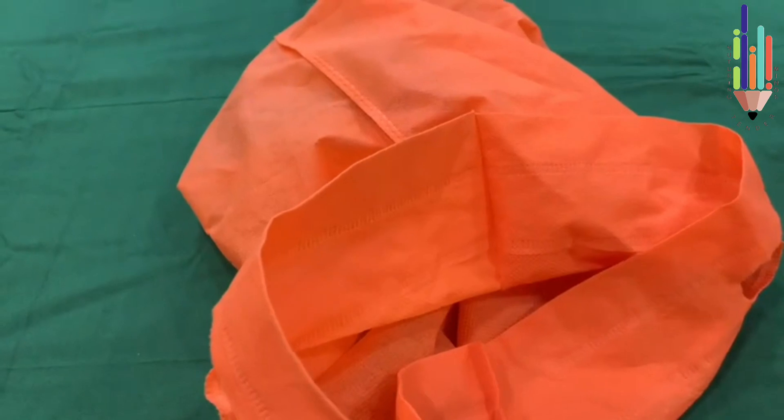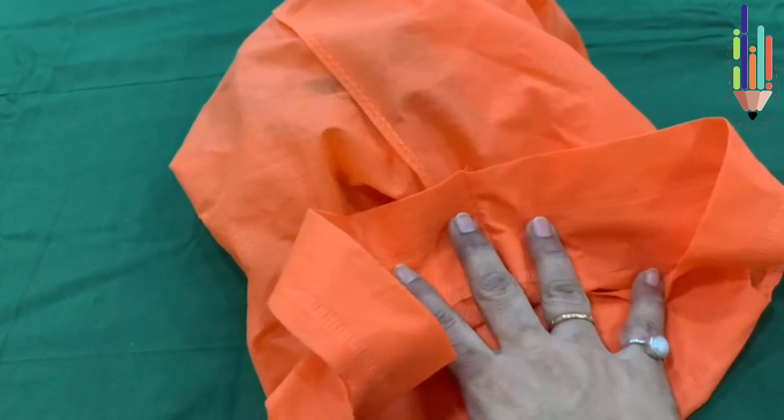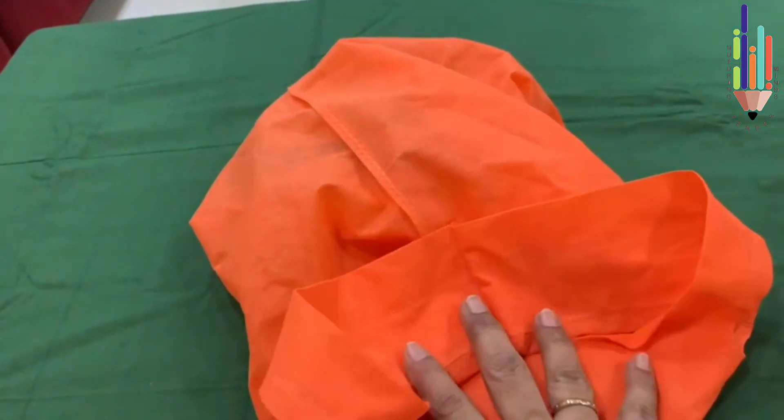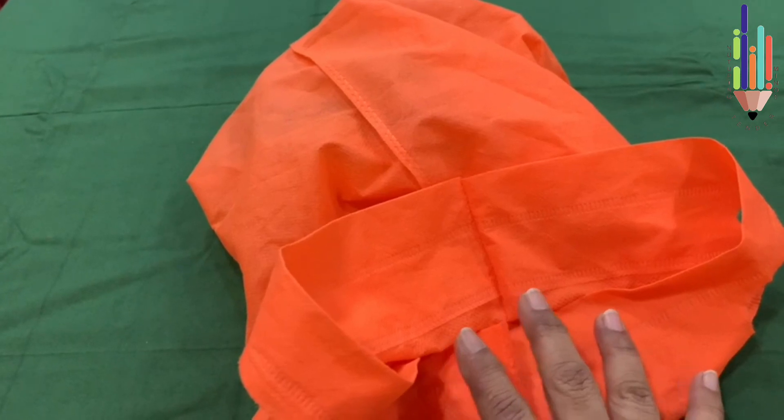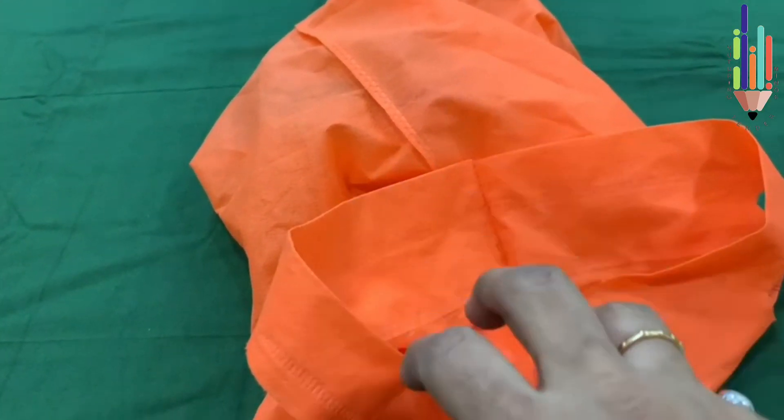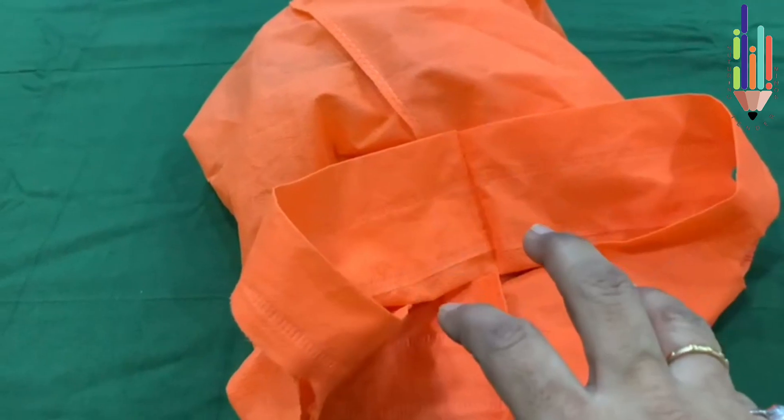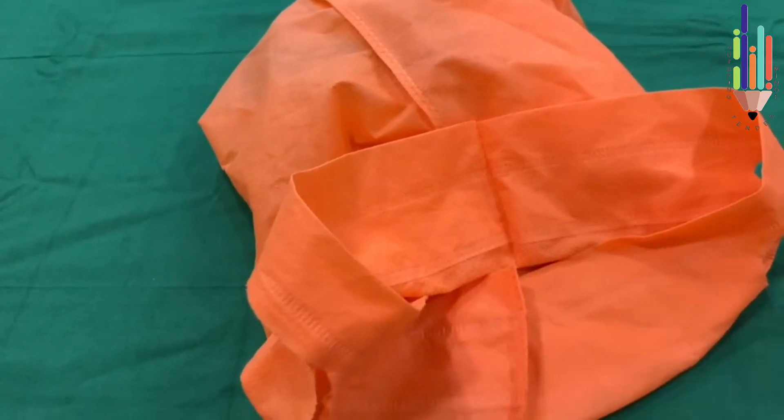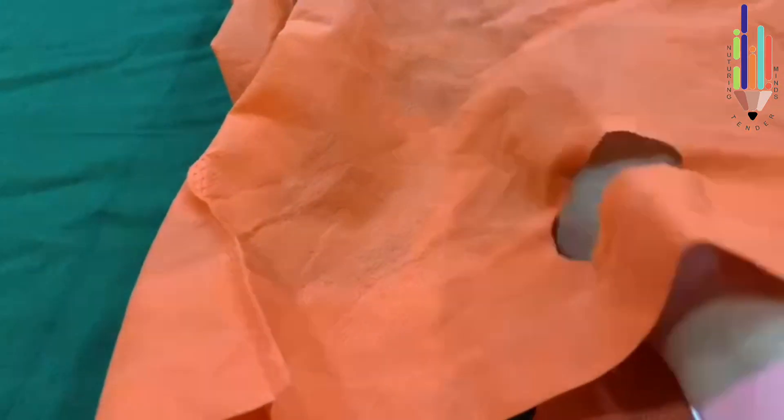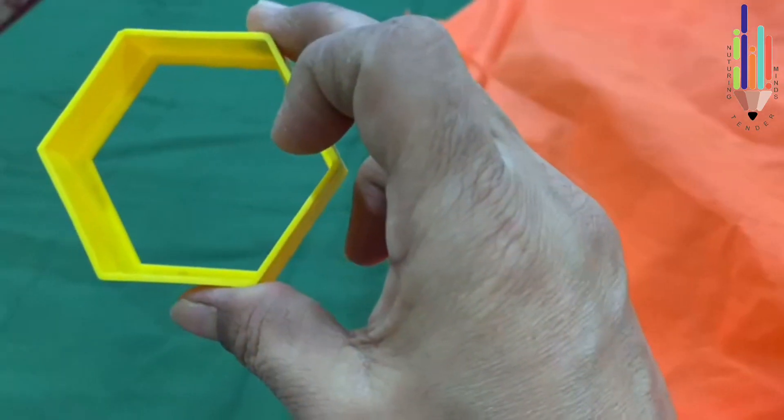These things which are in the bag are normal things which are in your home itself, and you can identify the shapes. Now I put my hand into the bag and let me remove a shape. Oh, this is a pastry cutter.